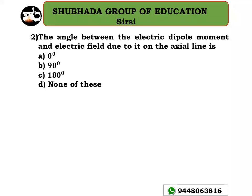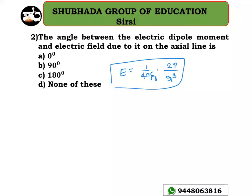The next problem: the angle between the electric dipole moment and the electric field due to it on the axial line. We know that the electric field E equals 1 divided by 4 pi epsilon naught into 2P divided by R cubed — the expression for electric field due to an electric dipole on its axial line. Since the electric field and dipole moment are both in the same direction, the angle between them is zero degree. So option A is the right answer.